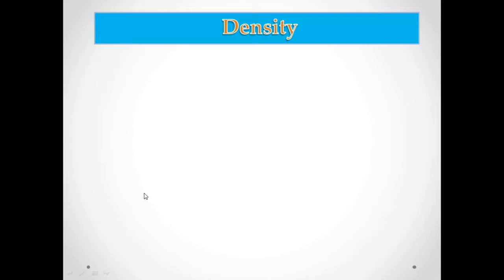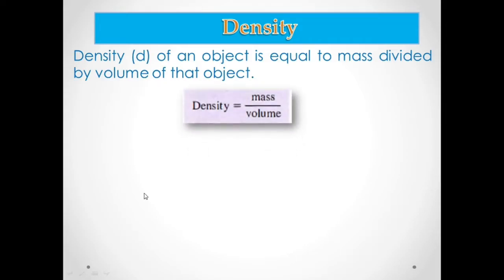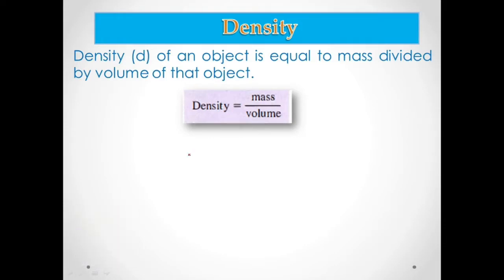When we say density, it is actually the mass of an object divided by its volume. Density is expressed with the formula: density equals mass over volume. If the density is unknown, the mass and volume are given in order for you to find the density.